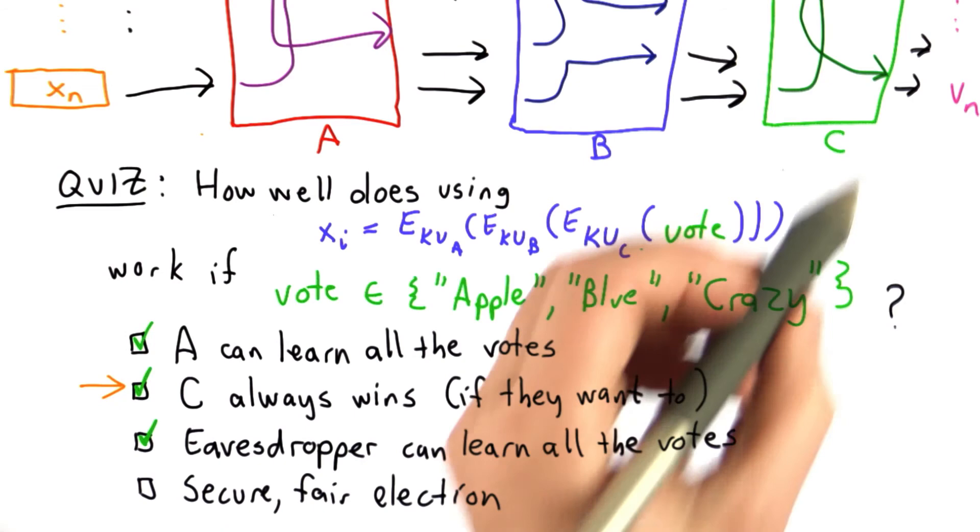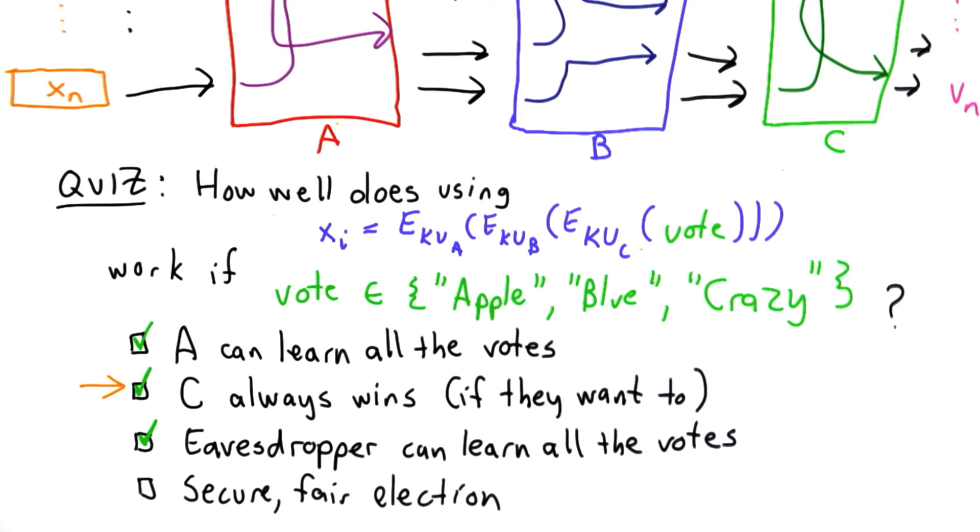But there's no point to the mixnet if this is what we do. So we need to do something different. This by itself is not going to work. What we need to do is add some randomization to our encryption.